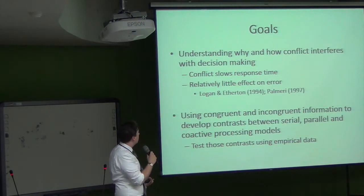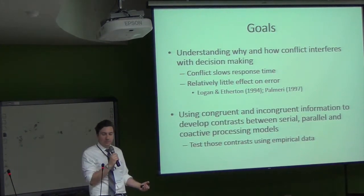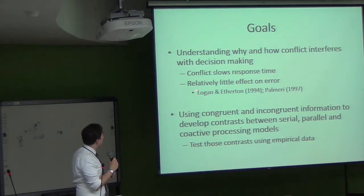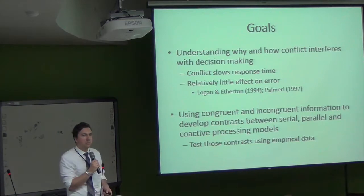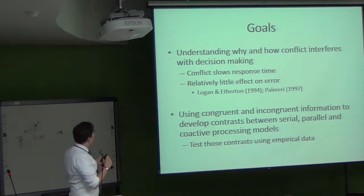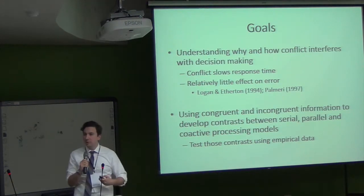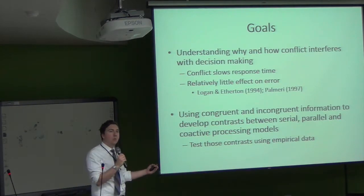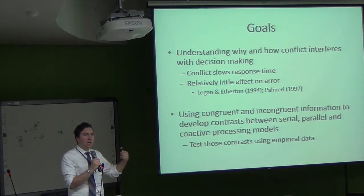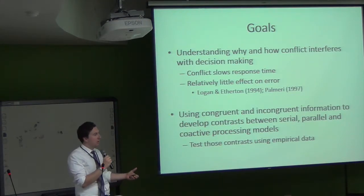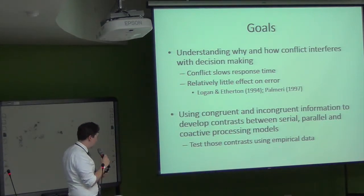The goal of this talk is to understand why and how conflict interferes with decision-making. It's well known that conflicting sources of information slow down response time, with relatively little effect on error, though the effects on response time are much stronger than on accuracy. The second goal is to see whether we can use this type of conflicting information to develop novel contrasts between different processing architectures — essentially reframing capacity in terms of conflict to recover diagnostic value.